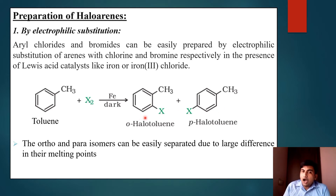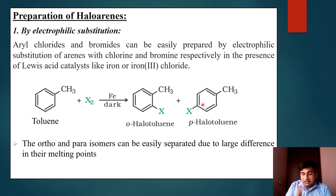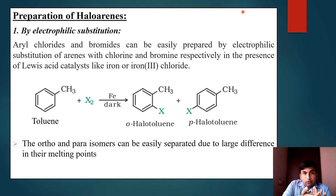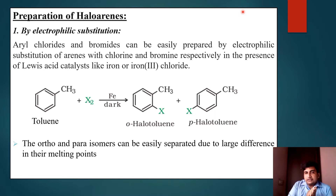These two products can be easily identified and separated due to the large difference in their melting points. Reaction with iodine is reversible in nature and requires the presence of an oxidizing agent like HNO₃ or HIO₄ to oxidize the HI formed during iodination.